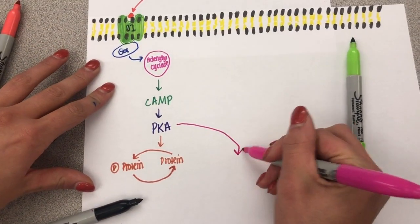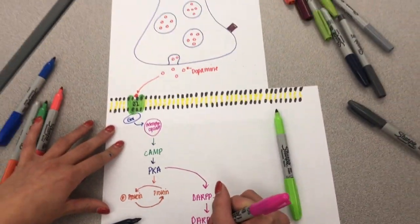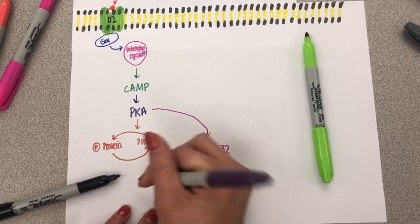PKA also activates DARP-32, which inhibits PP1 (protein phosphatase 1), preventing the excitation protein from being dephosphorylated.